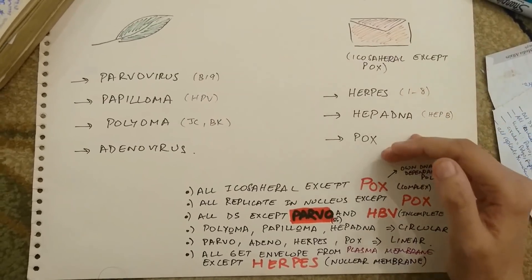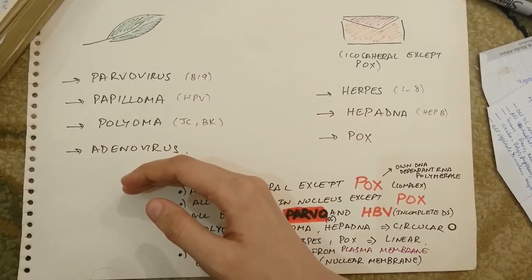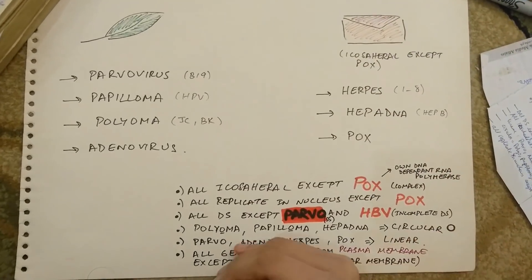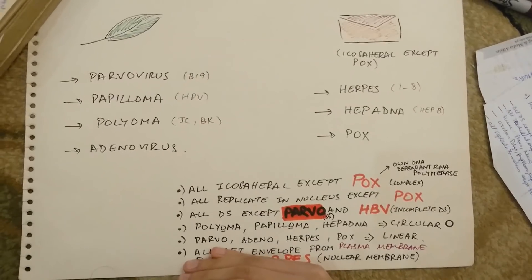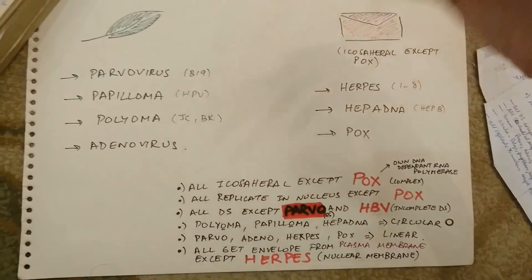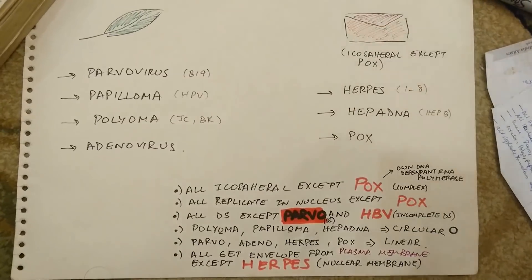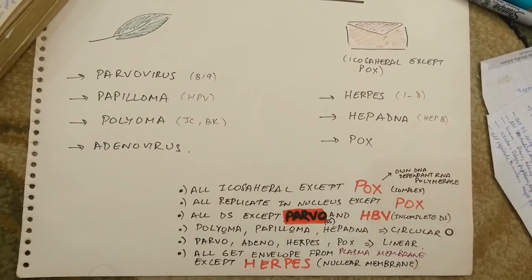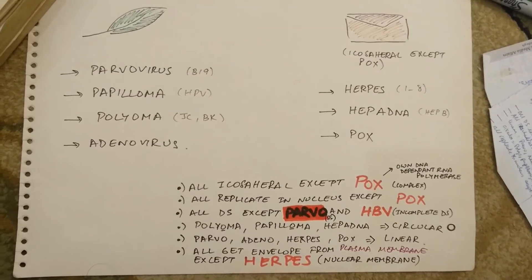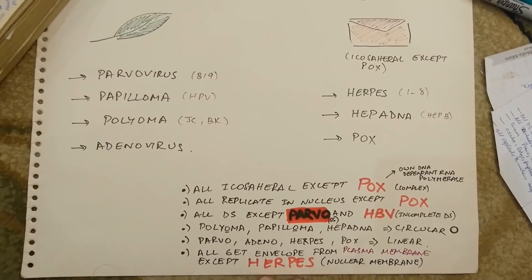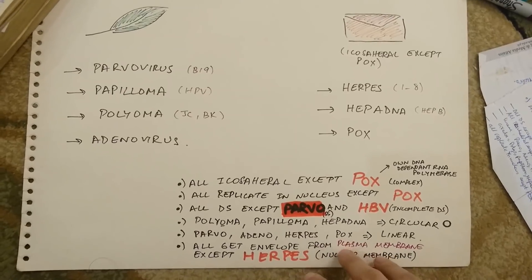Just like if you remember the enveloped DNA viruses you'll automatically remember the naked ones, the same case applies here. All of these viruses get their envelope from the plasma membrane as they bud out from the cell — except for herpes. Herpes gets its envelope from the nuclear membrane. So herpes likes keeping it private; it takes its envelope before leaving the cell, from the nuclear membrane.